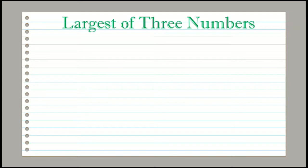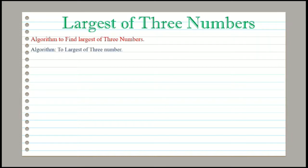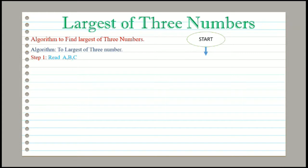Now we will write the algorithm and side by side draw the flowchart. The title of the algorithm is: to find the largest of 3 numbers. In Step 1, we will take 3 inputs — that is A, B, and C. The statement will be: Read A, B, C.